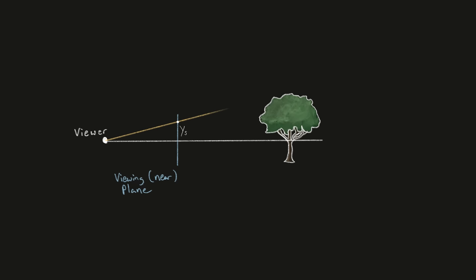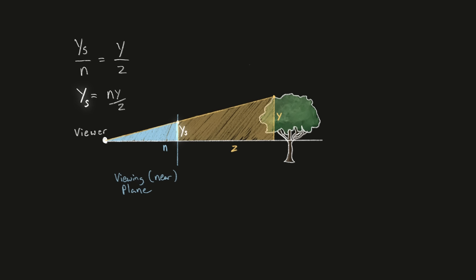For example, to calculate the apparent height of an object on the screen, we can use the property that the side lengths of two similar triangles are proportional to each other. We can rearrange this equation to show that an object's apparent height on screen is equal to the distance to the screen over the distance to the object multiplied by the object's true height. This equally applies for the x direction when calculating an object's apparent width on the screen. Also note that just as with the other viewing volumes, anything outside of the frustum will be clipped.